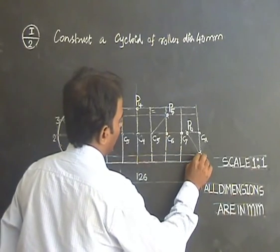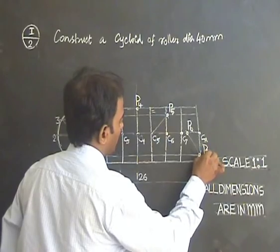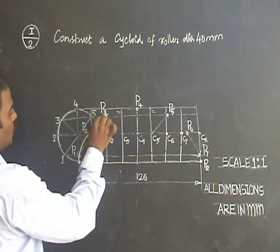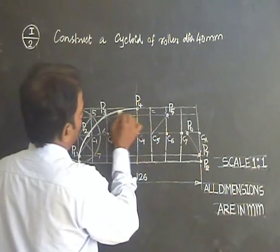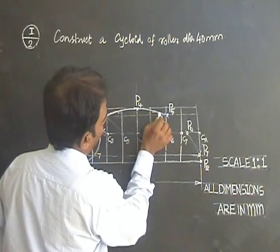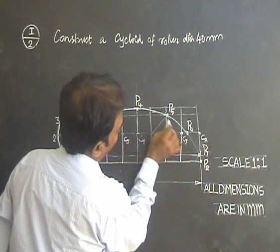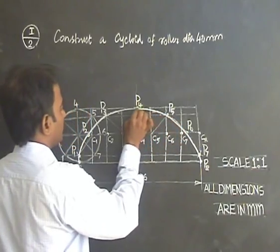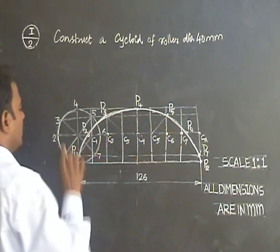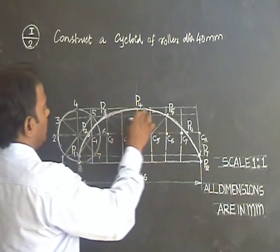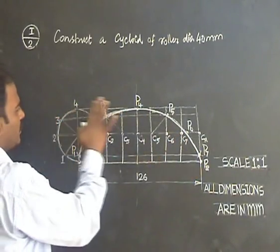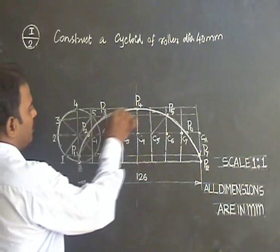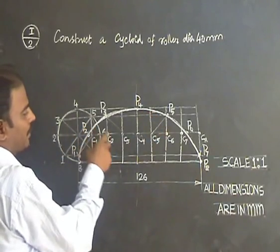Now connect these points with a smooth symmetrical curve. The answer obtained is cycloid of roller diameter 40 mm. Let this dark curve alone be made visible. All the other points and the construction are just guidelines. Ensure your answer is visible. This is only for one revolution. Sometimes the roller may take two revolution, three revolution and so on.